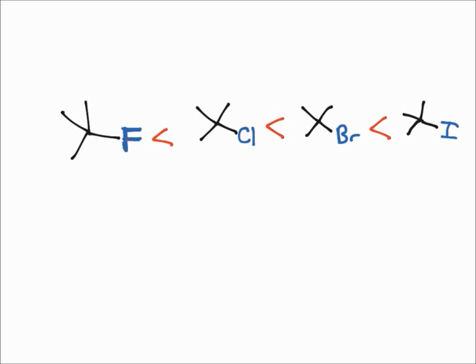Fluorine is really small and makes it a rather poor leaving group. Here we have the slowest, so the E1 mechanism would occur the slowest if you use that molecule. This one right here with the iodine on it would be the fastest.